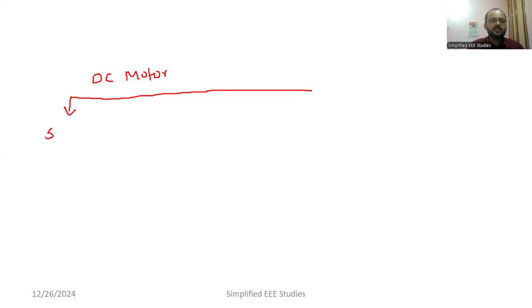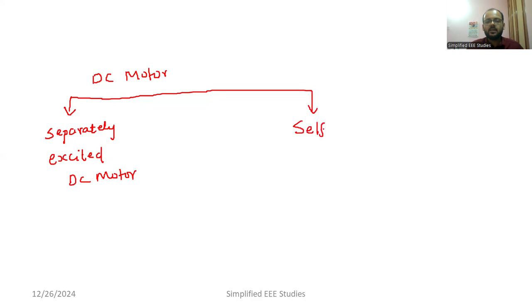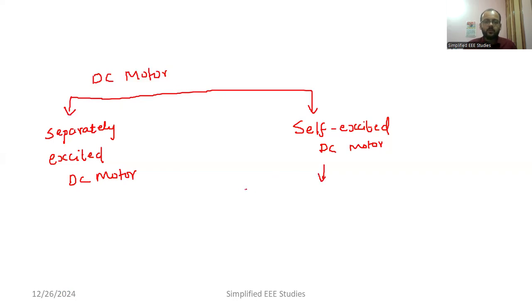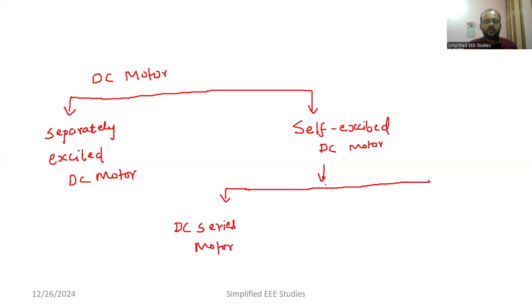One is separately excited DC motor and another is called self-excited DC motor. In the case of self-excited DC motor, the first type is called DC series motor, the second one is known as DC shunt motor, and the third one is known as compound motor.